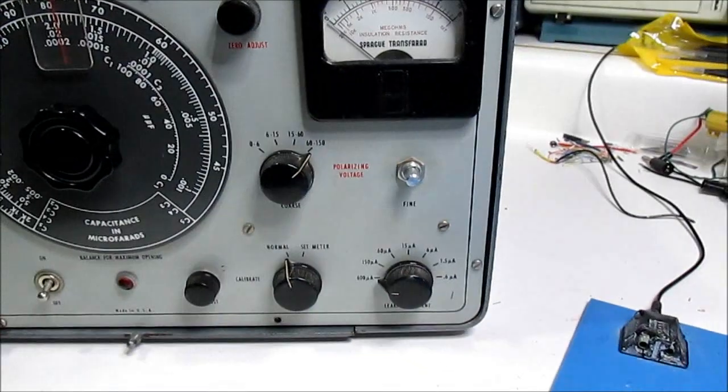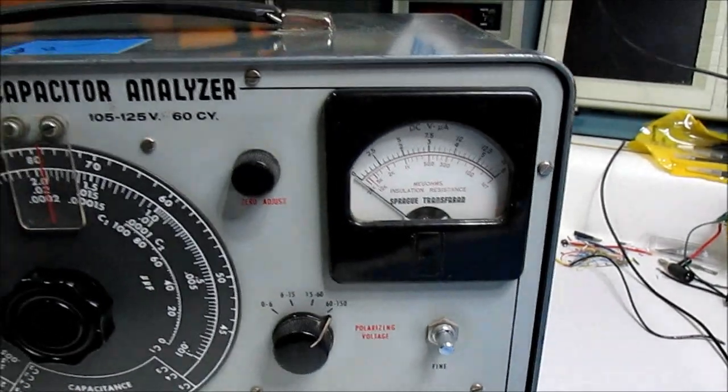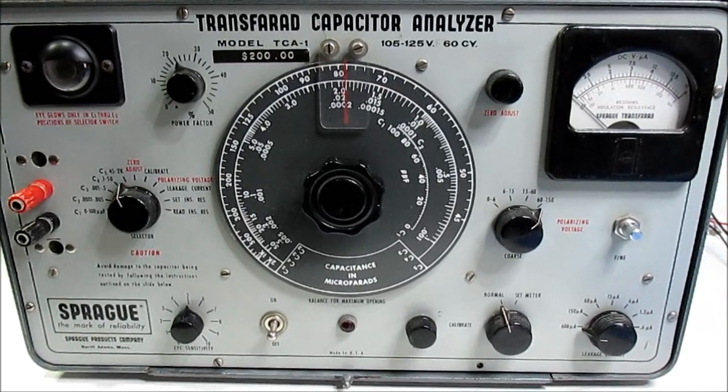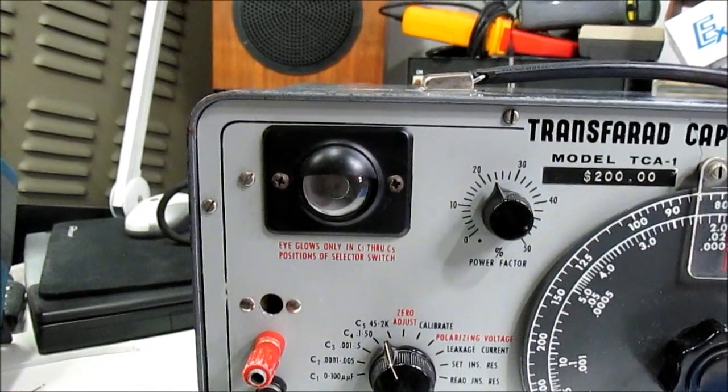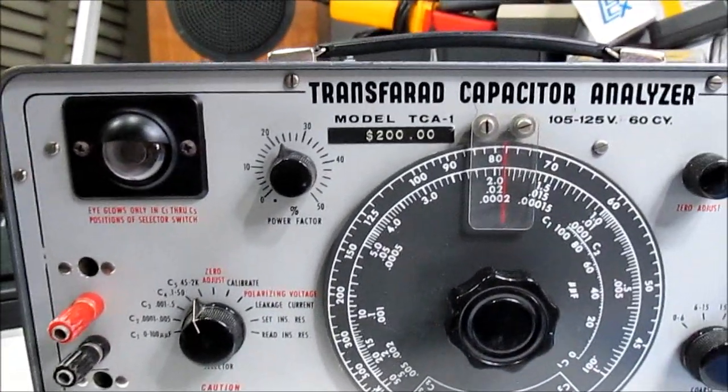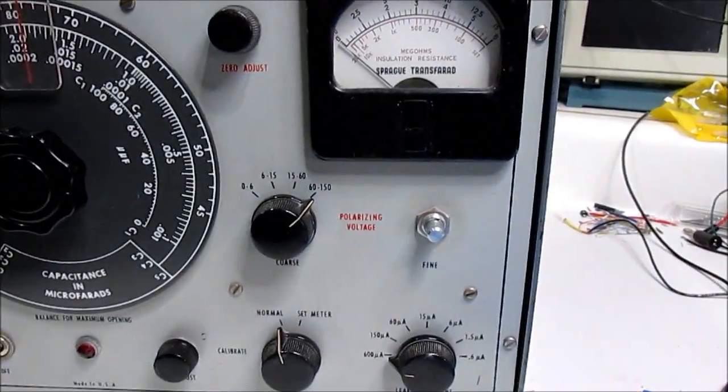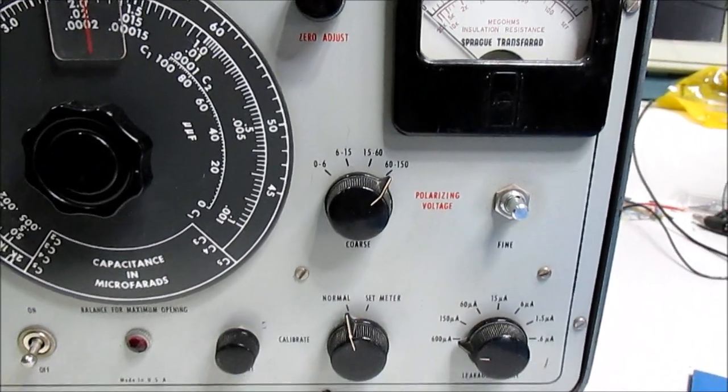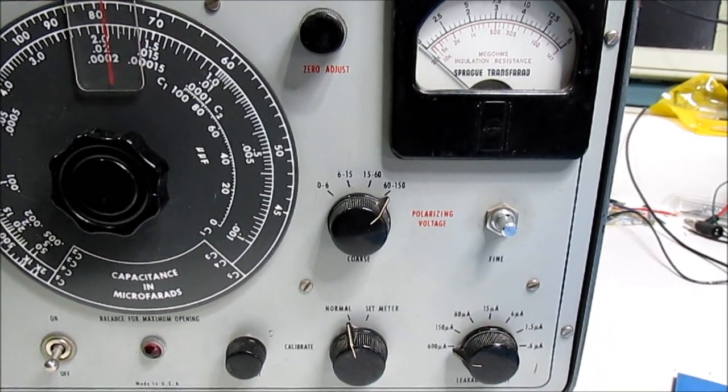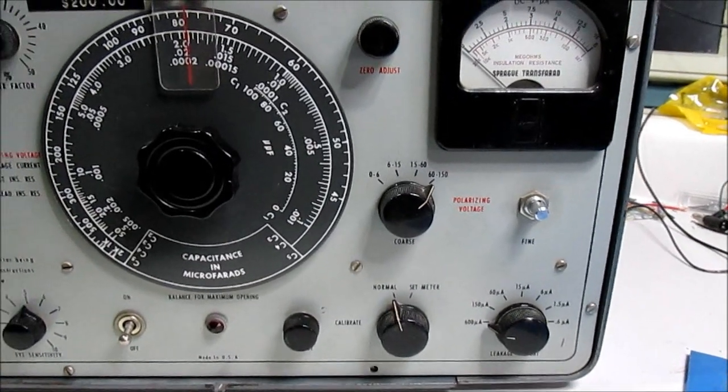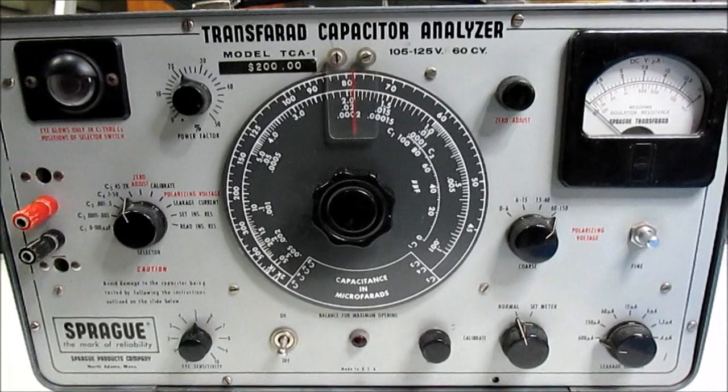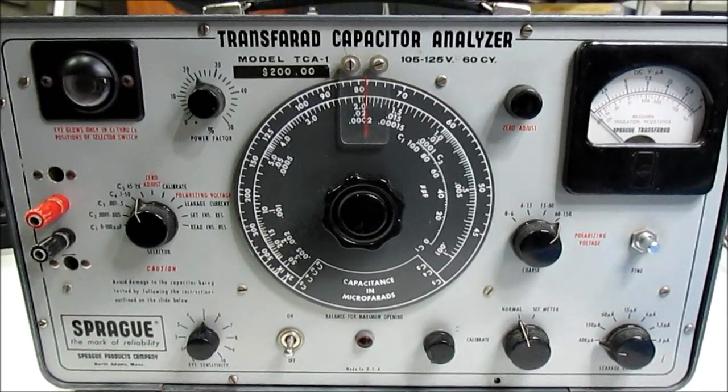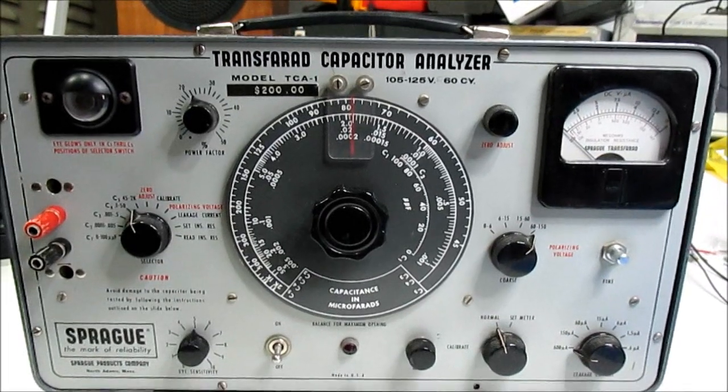I notice there's a missing knob here. What this does is you can measure capacitors with a bridge, and there's one of these eye tubes that's used as a null indicator. It also has power factor and leakage current and insulation resistance. This one only goes up to 150 volts. I know there were other similar models that Sprague offered that had higher test voltages. This one was more intended for transistor capacitors, which would have been low voltage things in the later 50s and into the 60s, whereas the vacuum tube stuff tended to use higher voltage capacitors.